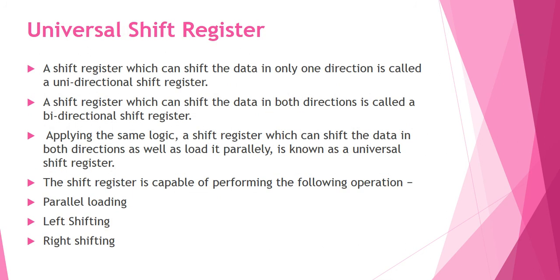A shift register which can shift data in only one direction is called a unidirectional shift register. A register in which data shifts in both directions and can also be loaded in parallel is called a universal shift register. The universal shift register is capable of performing shift-left, shift-right, and parallel load operations.